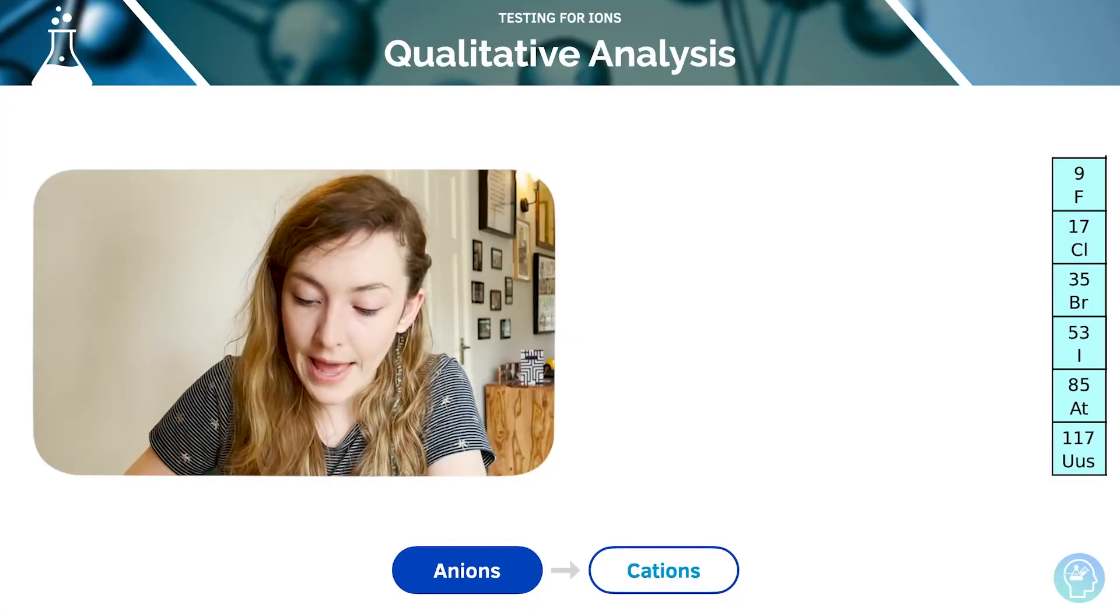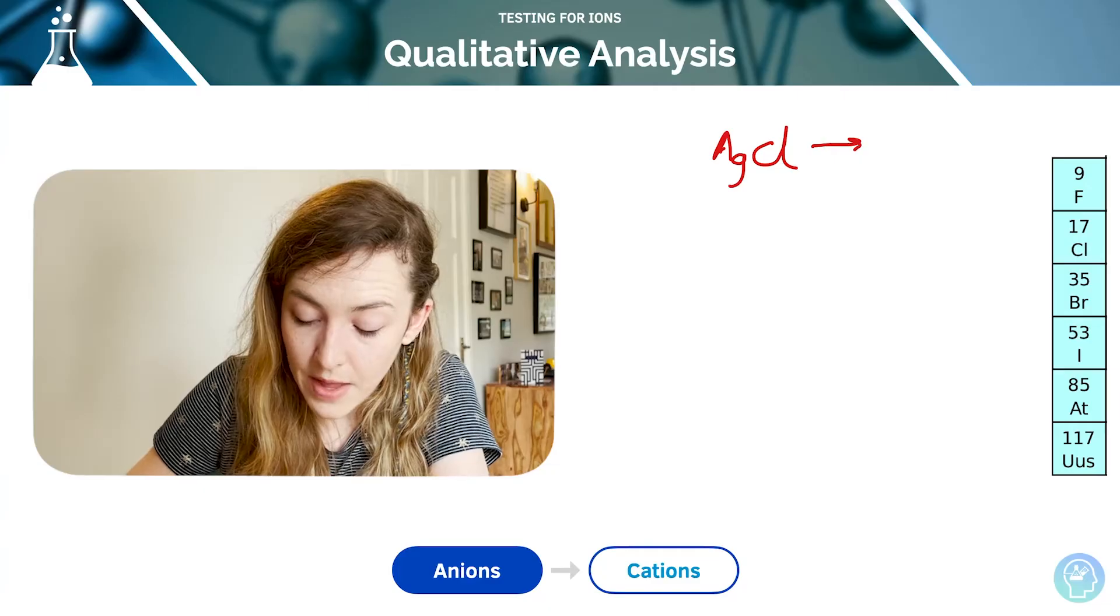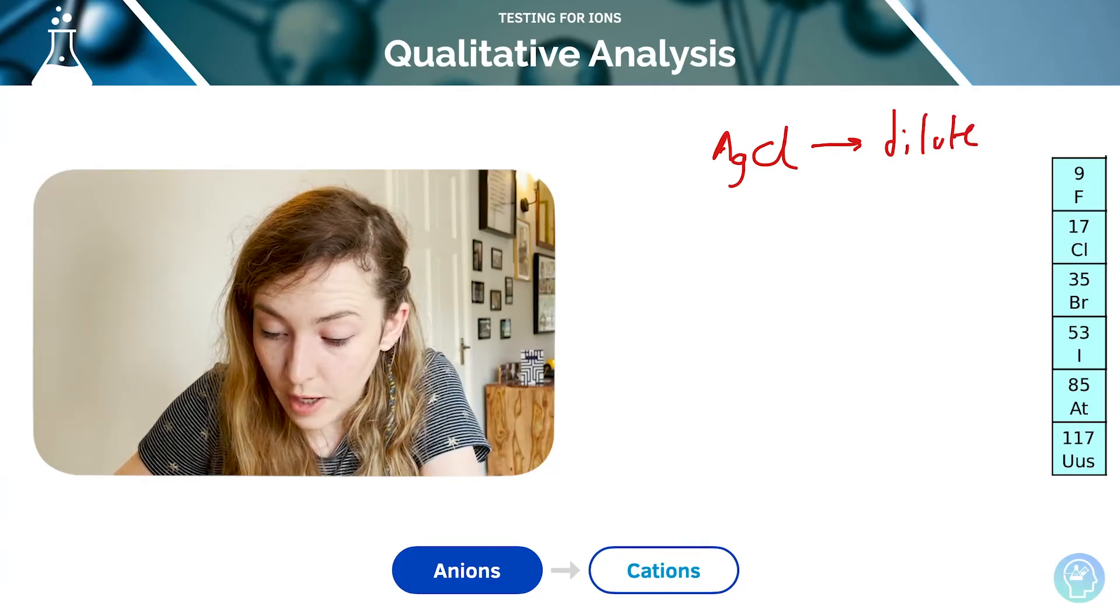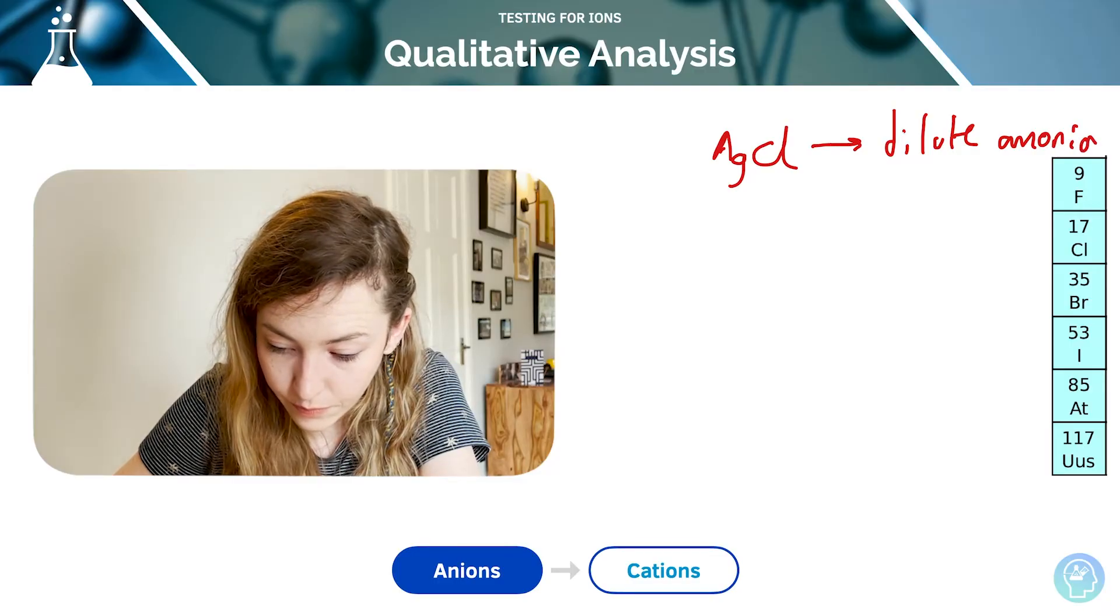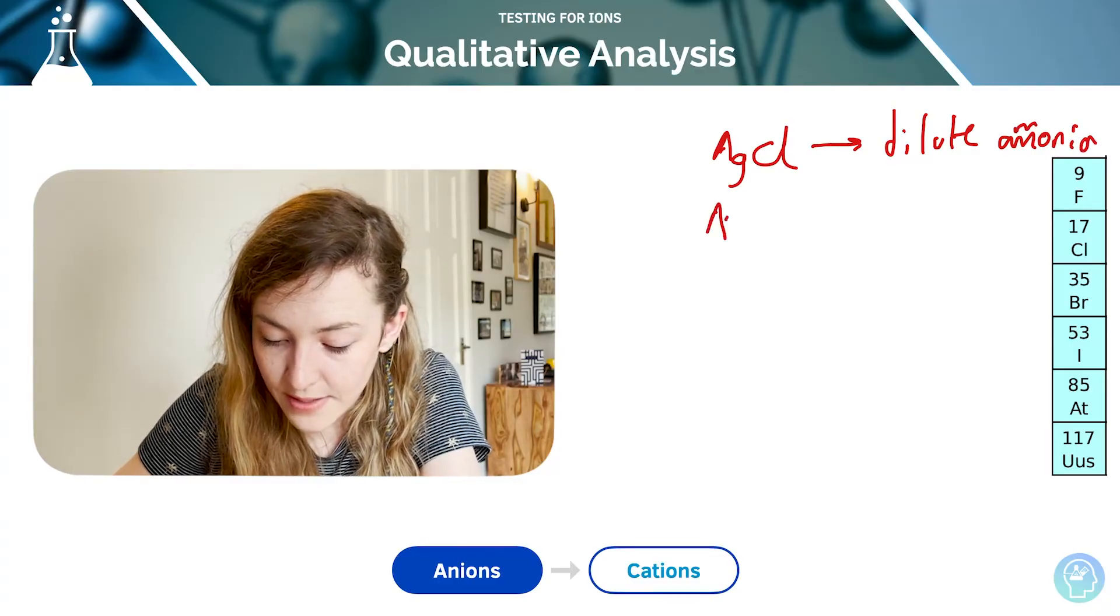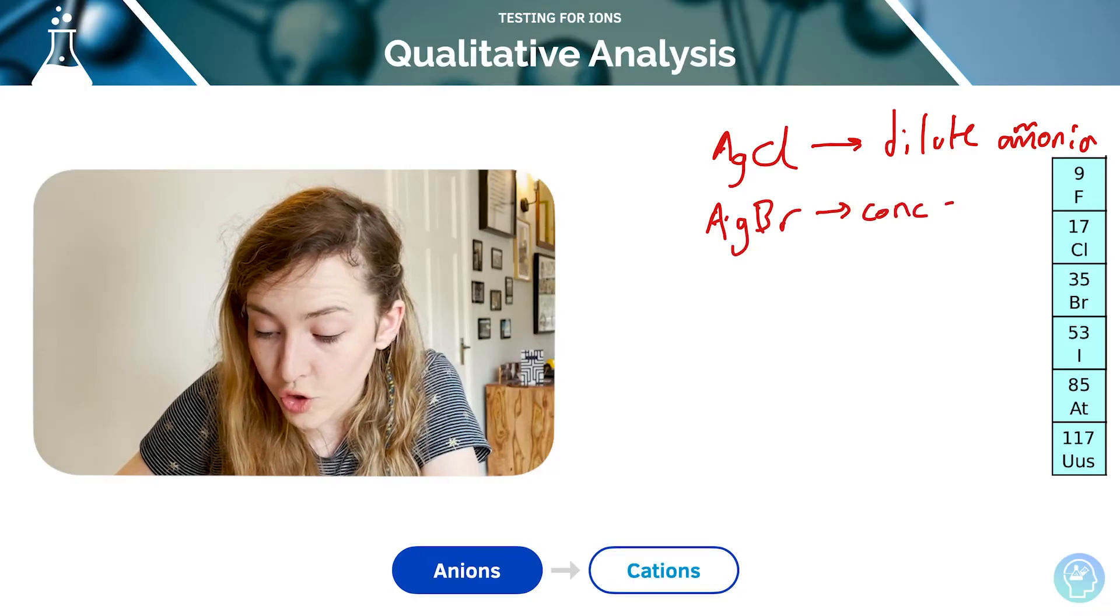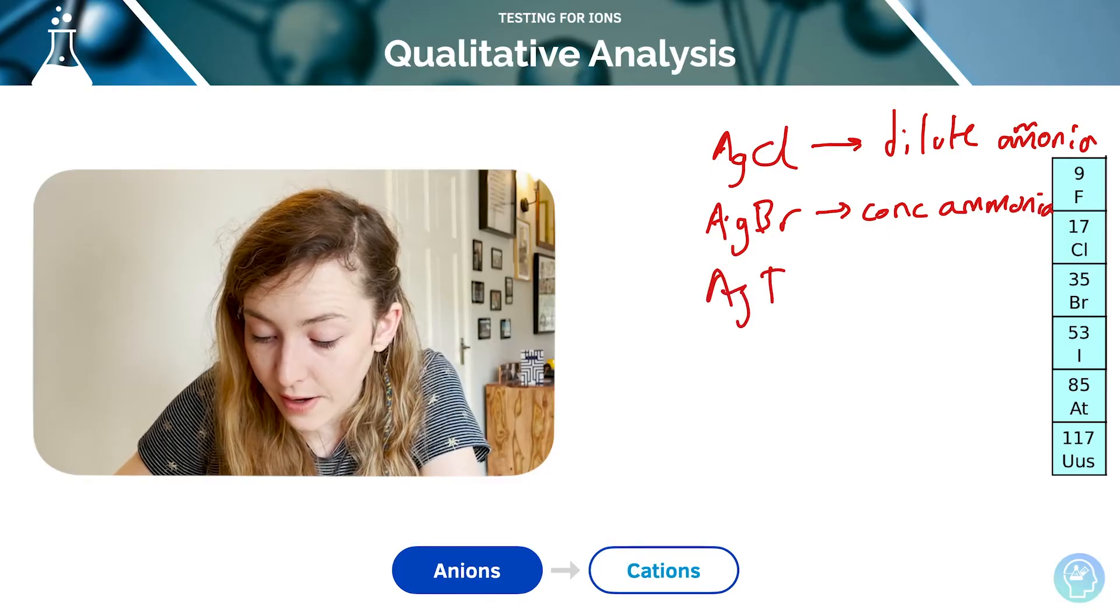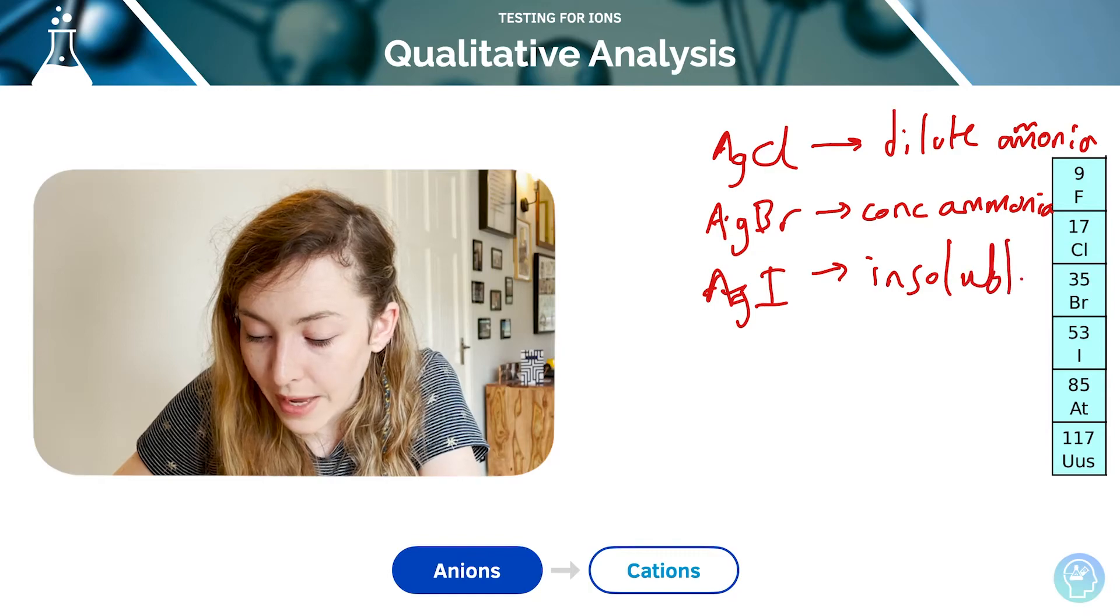Remember, if we have silver chloride, then this is going to be soluble in dilute ammonia. If it's silver bromide, it's going to be soluble in concentrated ammonia. And if it's silver iodide, then it is insoluble in ammonia.